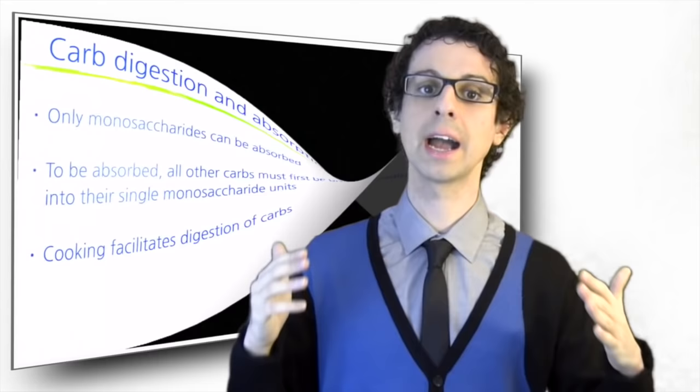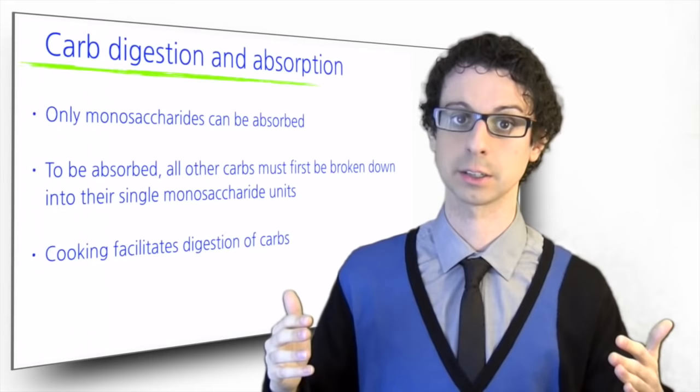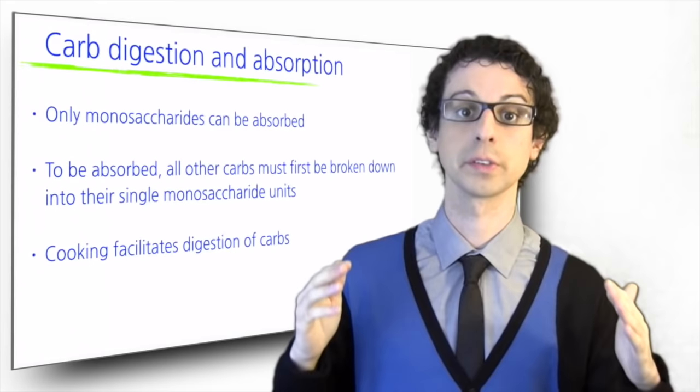Let's now spend a few words on how carbohydrates are digested and absorbed. As we already said before, the only carbohydrates that our intestine can absorb are the three monosaccharides, glucose, fructose and galactose. Every other carbohydrate, in order to be absorbed, must first be broken all the way down to these single sugar units. This is the goal of carbohydrate digestion.